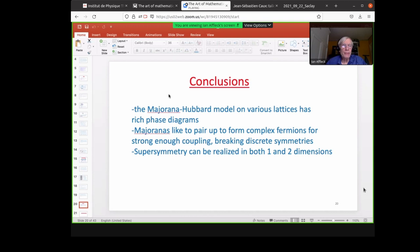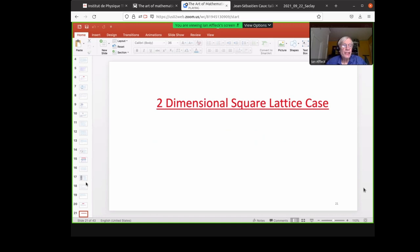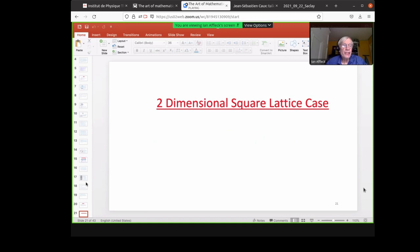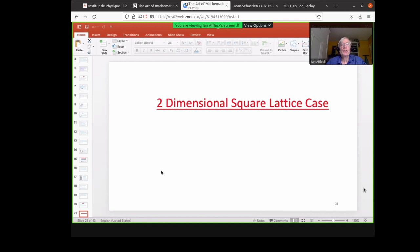Okay, so let me now move on to my conclusions and maybe I'll just touch briefly on the two dimensional case since I have a little bit of time left over. So the conclusions are that the Majorana Hubbard model in various lattices has a rich phase diagram. Majoranas like to pair up to form complex fermions for strong enough coupling. And this breaks the discrete symmetries. And supersymmetry can be realized in both one and two dimensions. So I have about seven minutes left. So let me discuss briefly the two dimensional case.